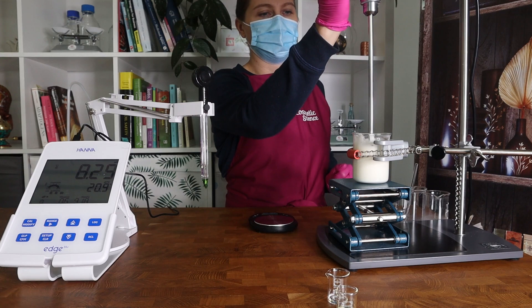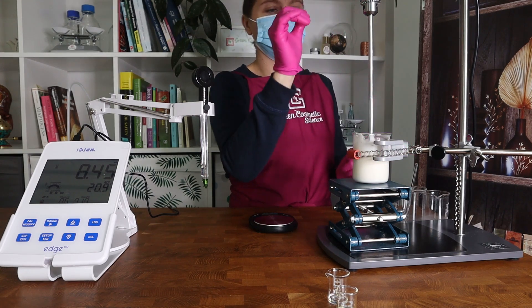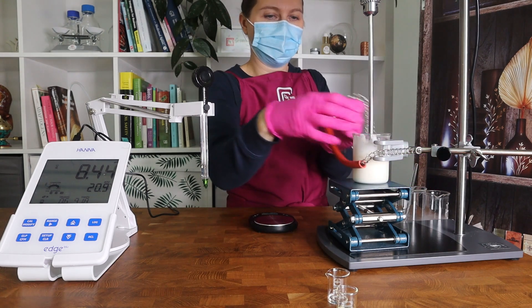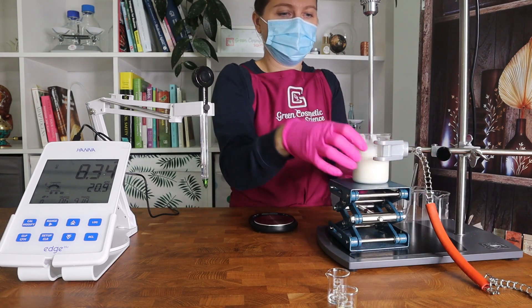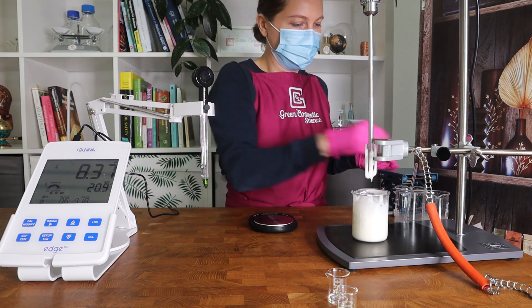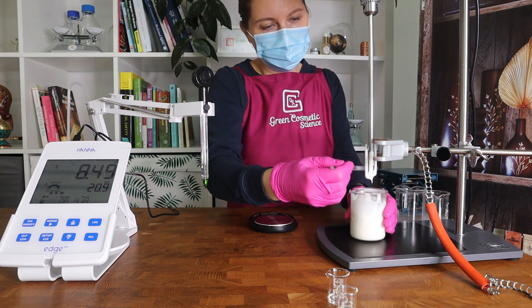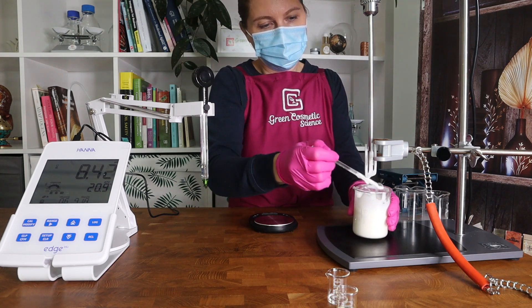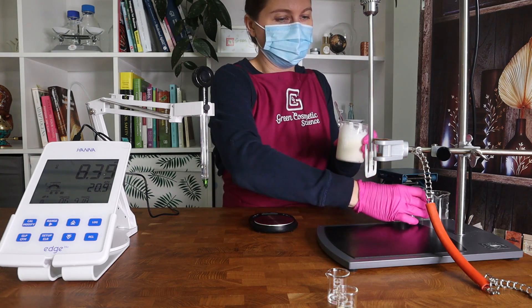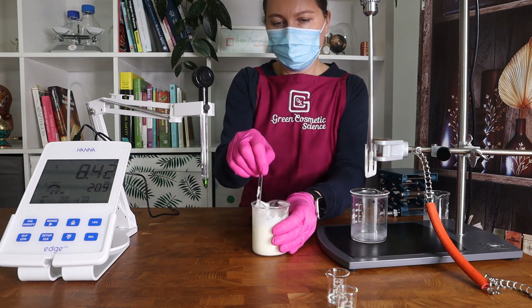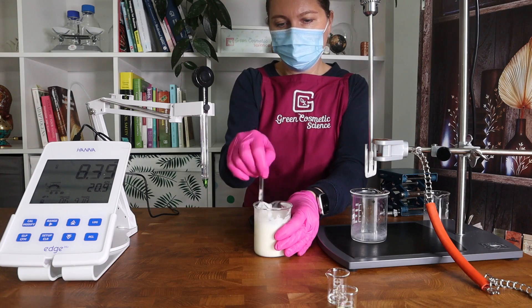Our emulsion has reached under 30 degrees and it's time to add the preservative and the essential oil. The preservative system that we are using is independent of the pH and we can actually add the preservative directly to the emulsion now, but just to make sure that we are not completely out of range, we will prepare a 10% dilution and measure the pH.